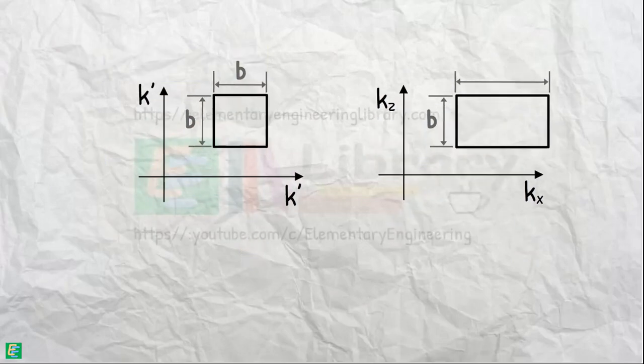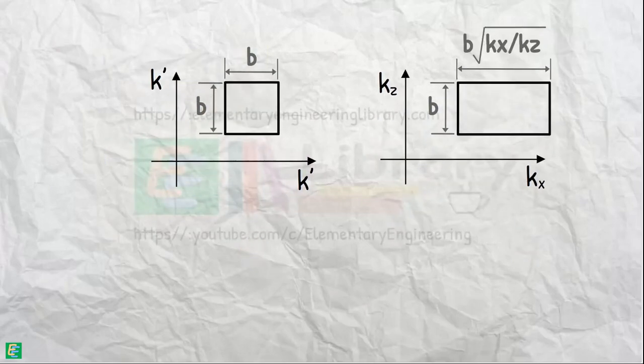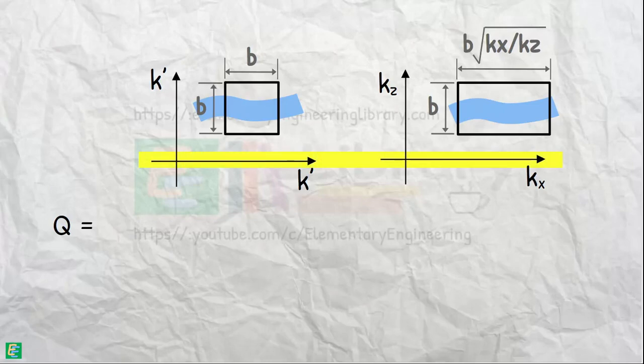Since both are the same sections, the quantity of water that flows through the section in both cases must be equal. So, we can write quantity of water q equals the permeability of this section k multiplied by the cross-section area a multiplied by the hydraulic gradient across this section i.